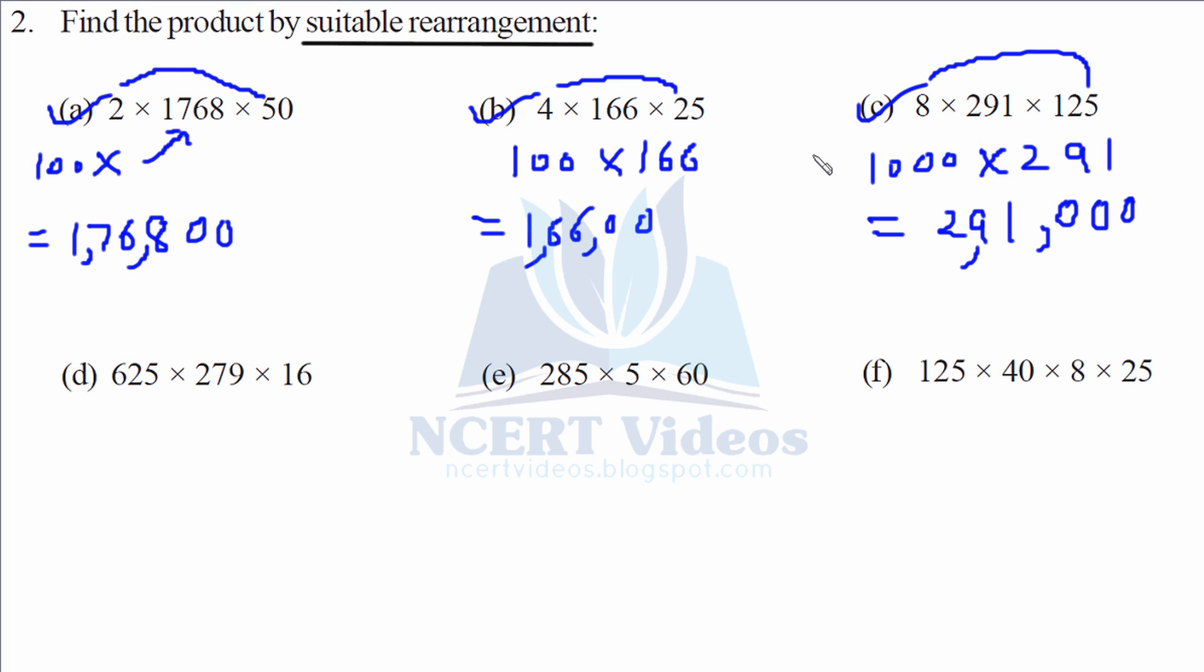Here, 625 into 16 will make us something in terms of 00s. So what is it? After multiplying, we get 10,000 into 279. Now simply adding the zeros in the last.